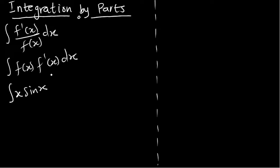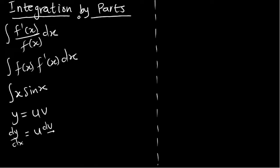Let's derive the formula from first principles. We know that if y equals uv, then differentiating using the product rule gives us dy/dx equals u·dv/dx plus v·du/dx.